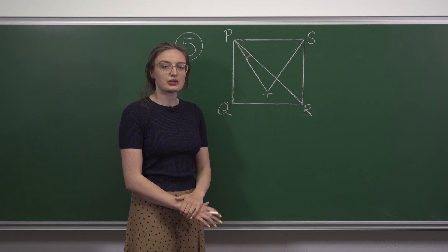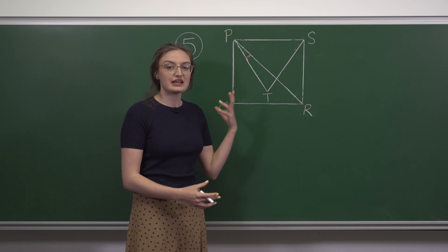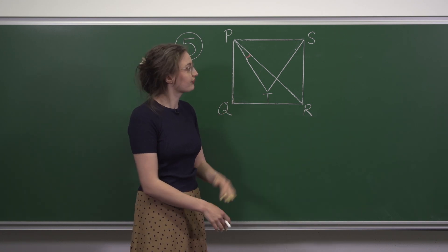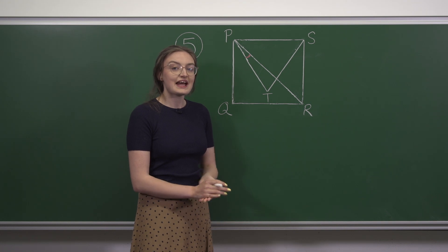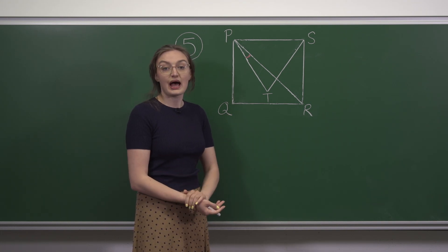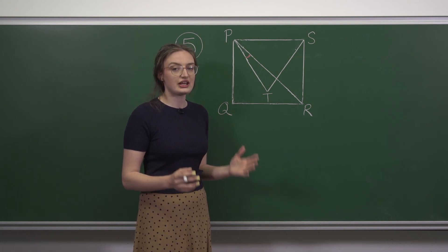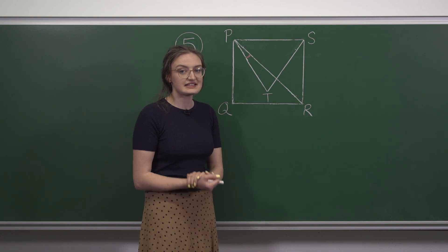This question needs us to know some facts about the angles in equilateral triangles and squares. Firstly, the angles in an equilateral triangle add up to 180 and they're all equal. So each angle is 60.